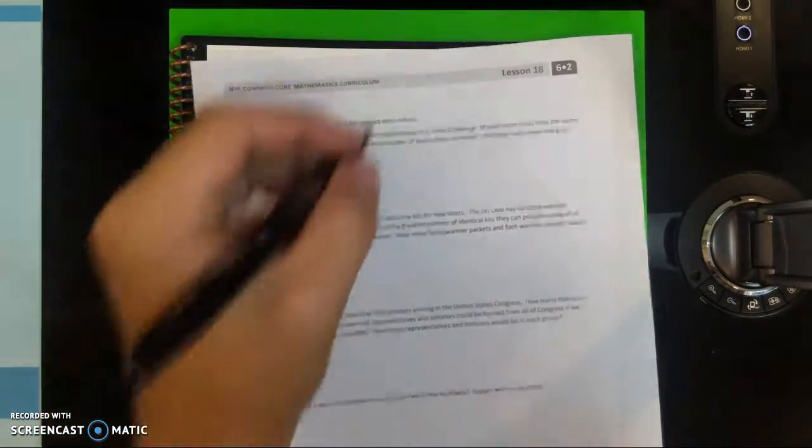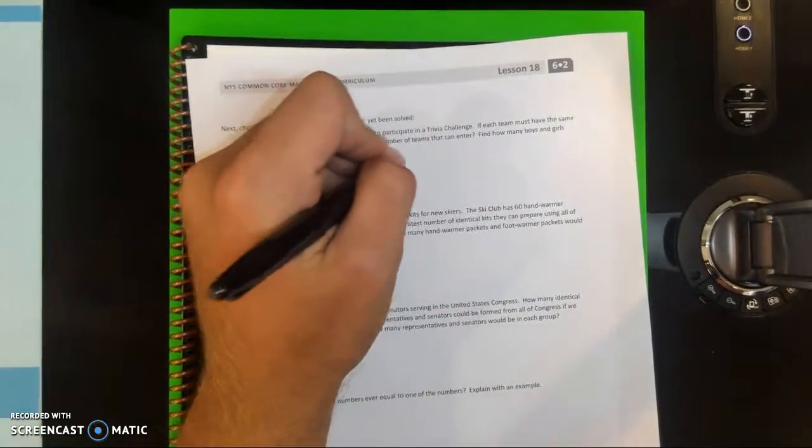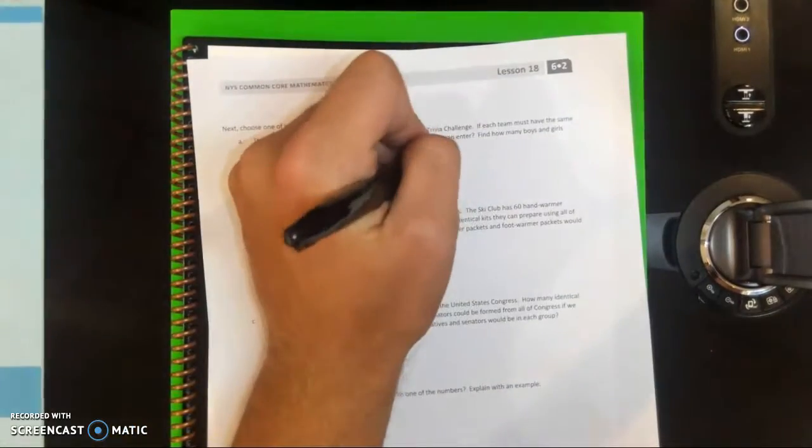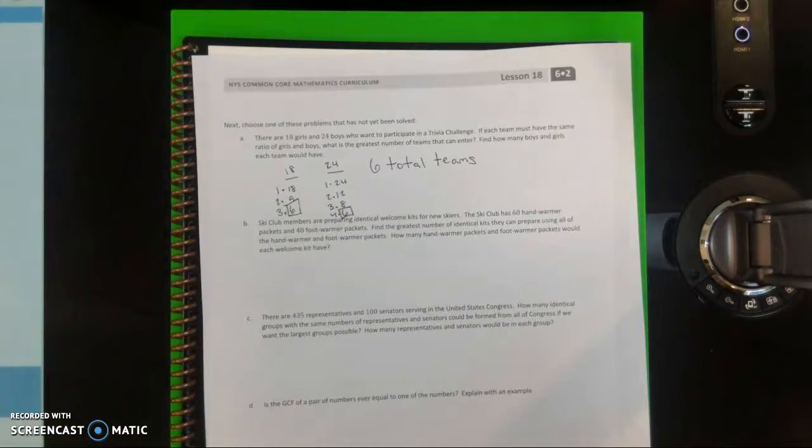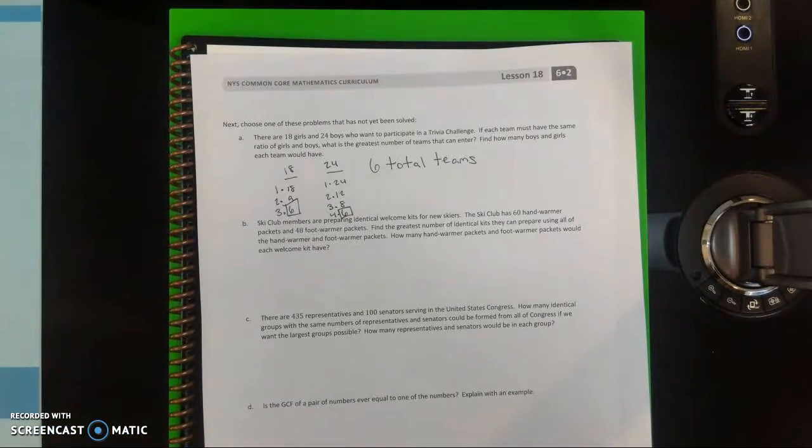So if there are 6 total teams, we then just divide each number of girls and boys by 6 to see how many girls and boys there would be on each team.